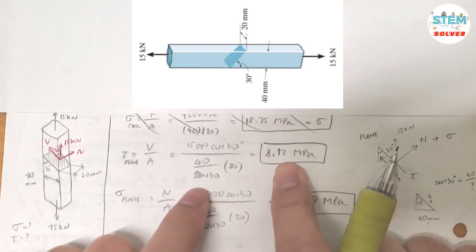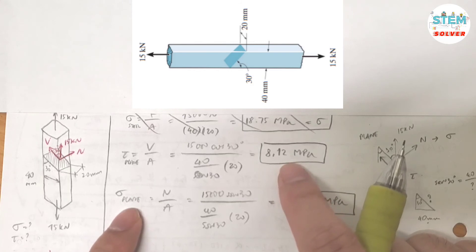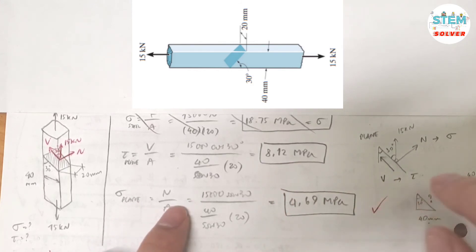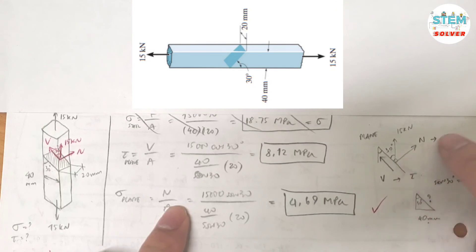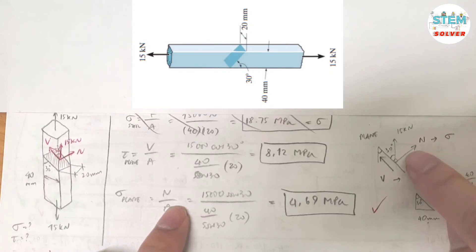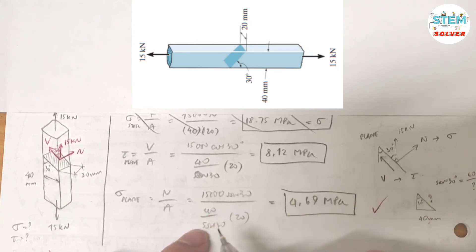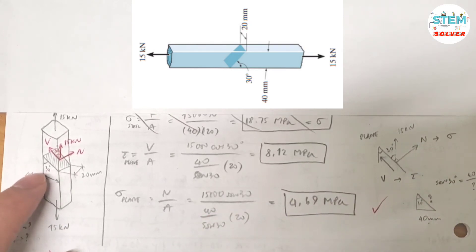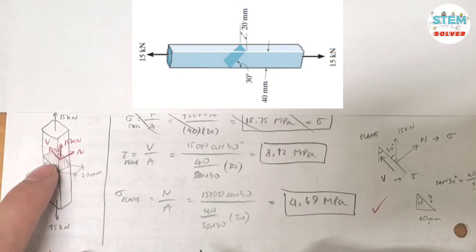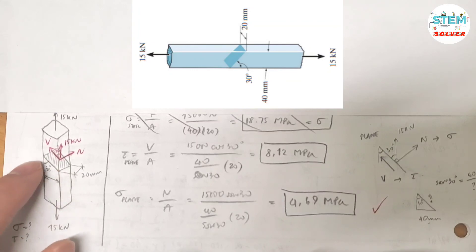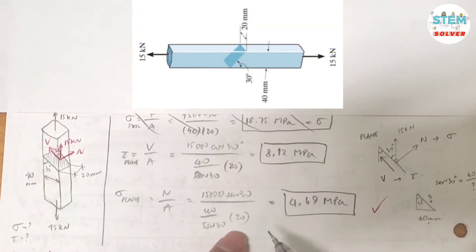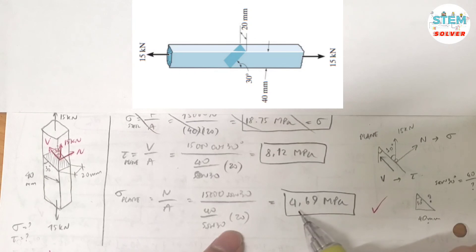Putting that into the calculator gives the shear stress result. For the normal stress, it is equal to the normal force divided by the area. The normal force is perpendicular to the plane — it is the y-component of the 15 kN force — so that gives 15,000 × sin(30°). Divide by the same area, which is (40 / sin(30°)) × 20. Putting this into the calculator gives 4.69 MPa. That is your final answer.